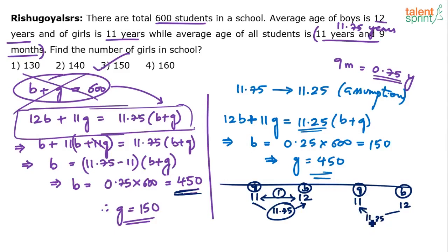11.25 is closer to 11, while 11.75 was closer to 12. When 11.75 is closer to 12, it means the weight — meaning the quantity, the number — of boys is more than the number of girls. That is why the average is pulled towards the boys.